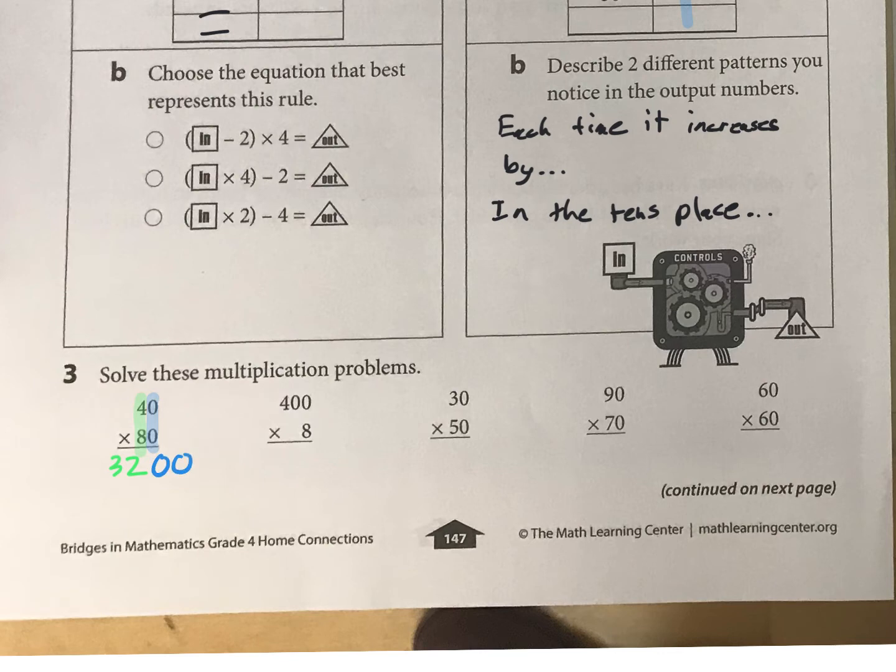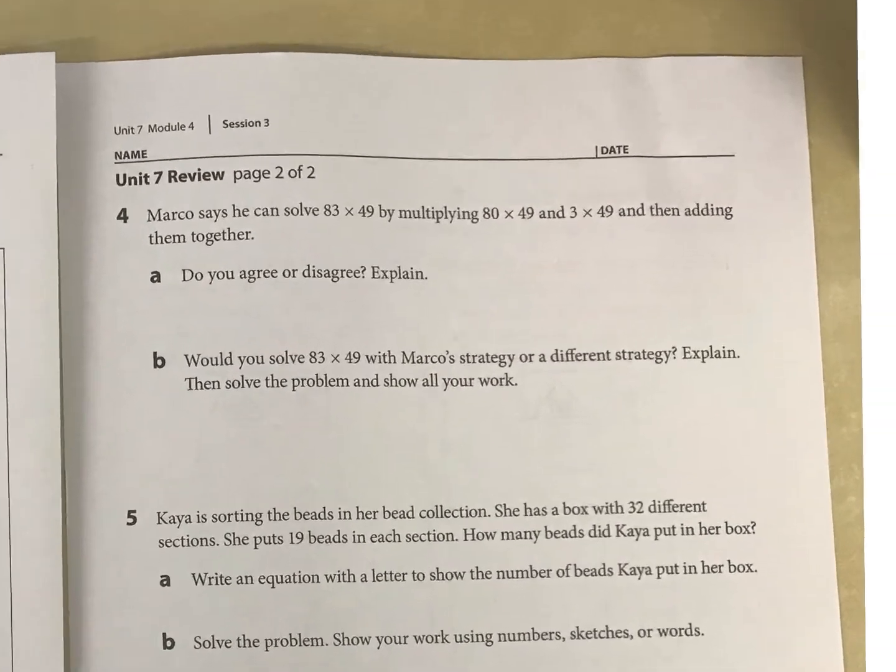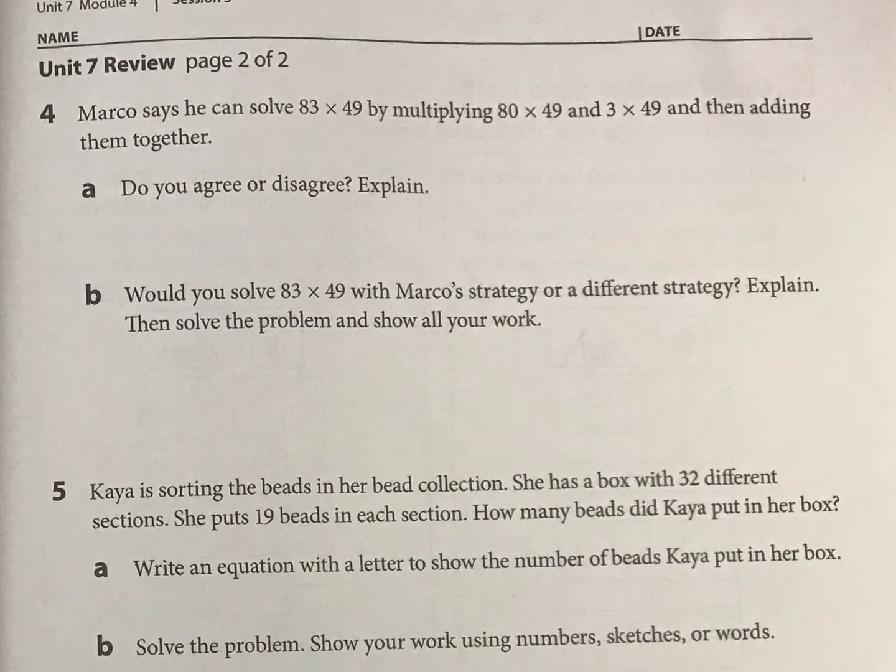Okay, let's look at this next page here quickly. We've got Marco saying he can solve 83 times 49 by multiplying 80 times 49 and 3 times 49. Well, that sounds like partial products to me. Did he do it correctly? If so, you can answer A.